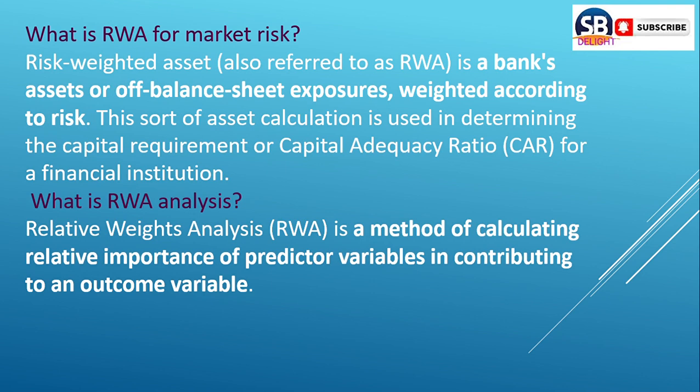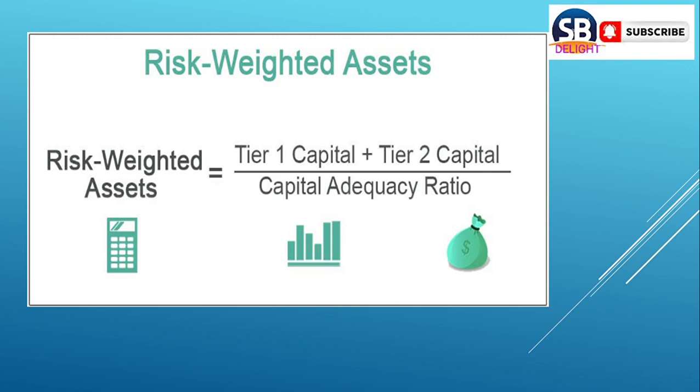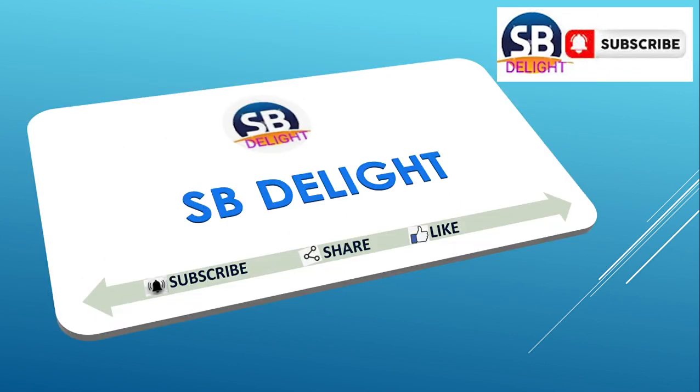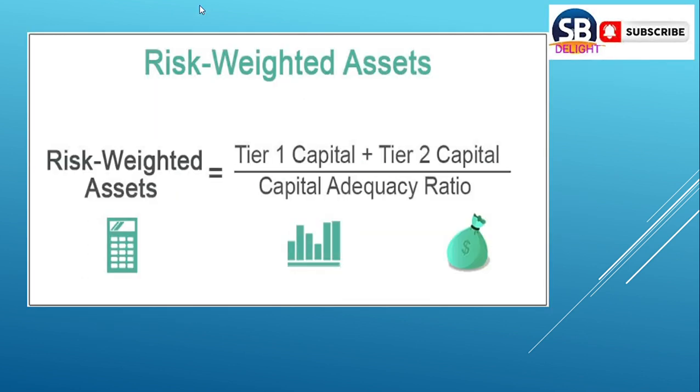RWA analysis — Relative Weighted Assets — is a method of calculating the relative importance of a predictor variable in its contribution to an outcome variable. Here I have given a formula and I will explain how it is calculated.